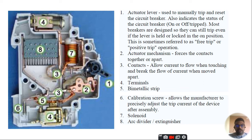We have the calibration screw - most important, it allows the manufacturer to precisely adjust the trip current of the device. Then we have the solenoid, arc divider, and extinguisher. The actuator lever is used to manually trip and reset the circuit breaker.